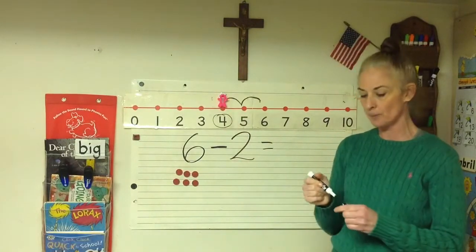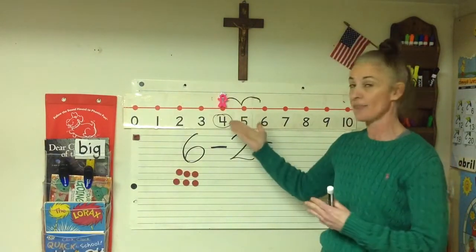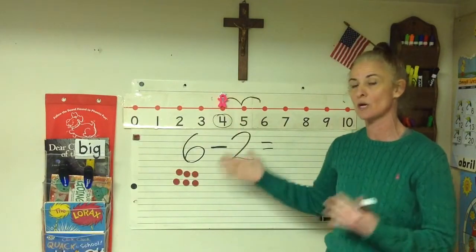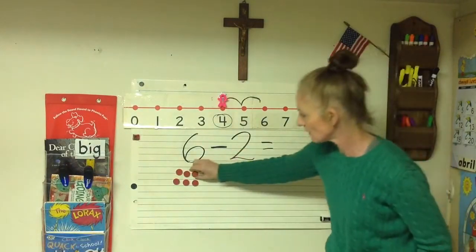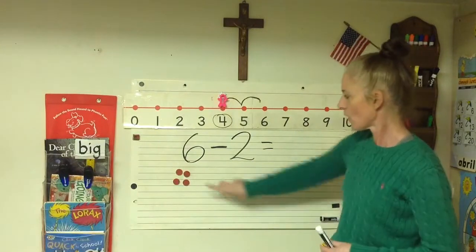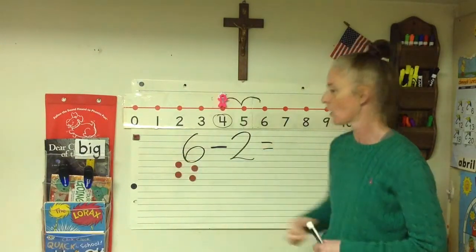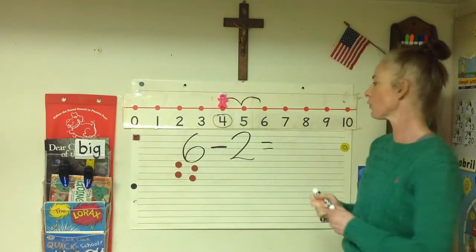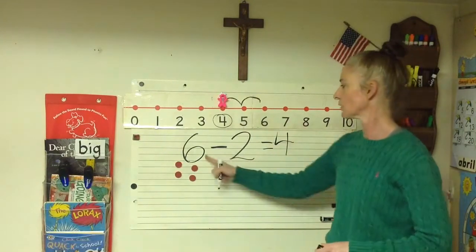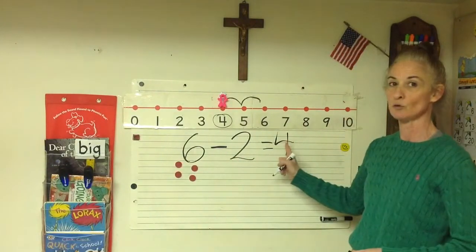Let's check with the manipulatives. You might do this with your abacus and the number line so you can see how they work the same way. I'm going to take two away. Are we left with four? One, two, three, four — we are. So four is our difference. Six minus two equals four.